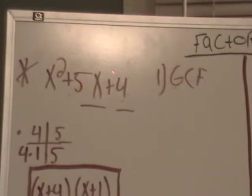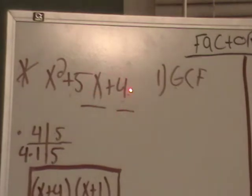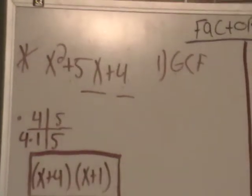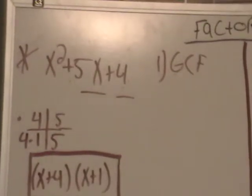Now these underlined numbers, 5x and 4, is what you're going to look at. I use a t-chart to organize what I'm about to do. You want to see what multiplies to be 4, but adds to be 5.